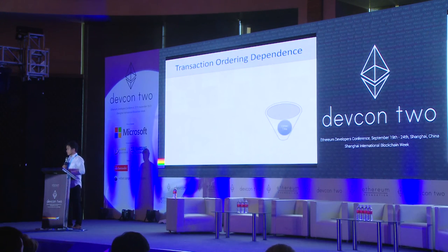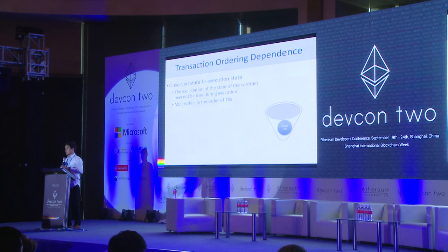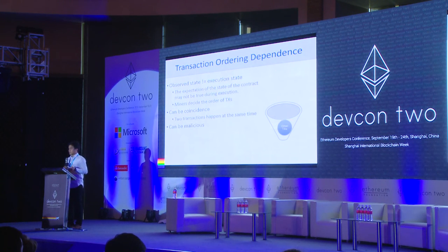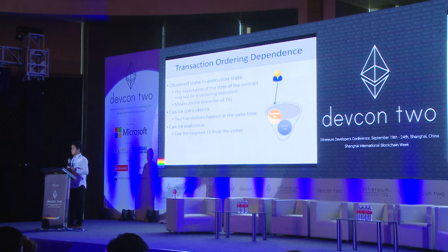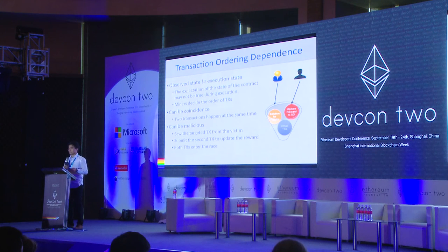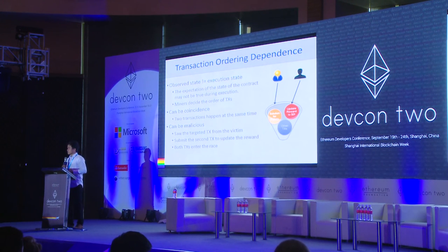The core problem in transaction ordering dependence is that the state the user observed when submitting the transaction is different from the actual state of the smart contract when the transaction is executed. This can happen by coincidence, since two transactions can occur at the same time. But it can also be malicious: if the owner sees the targeted transaction from the victim, he can send a different transaction to update the reward, and the two transactions enter a race where the owner has some non-zero probability of winning.